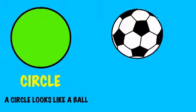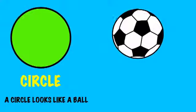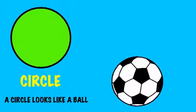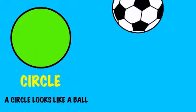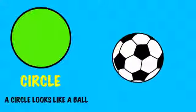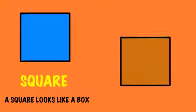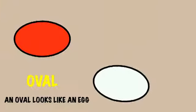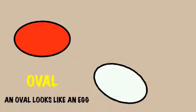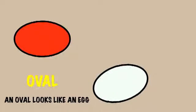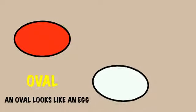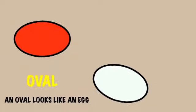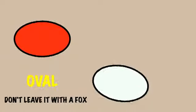A circle looks like a ball. A square looks like a box. An oval looks like an egg. Don't leave it with a fox.